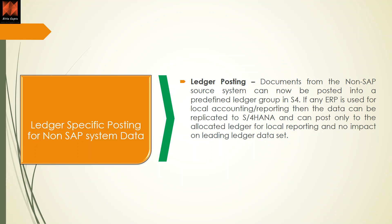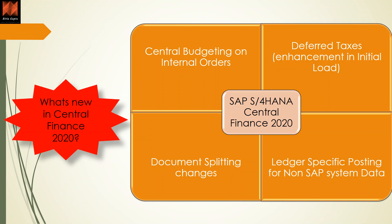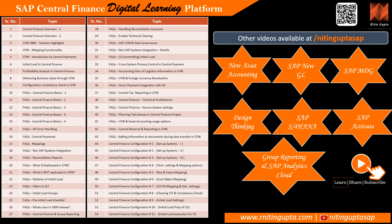In summary, S/4HANA 2020 overall has brought a lot of changes which are available on help.sap.com. The changes we discussed are specific to the CFIN area, impacting Central Finance. I will come up with another video on S/4HANA 2020 changes as a summary, so rather than reading an 800-page document you can see a summary. For now, keep reading and subscribe to the channel — don't forget to leave your comments and feedback.